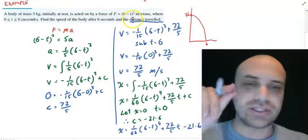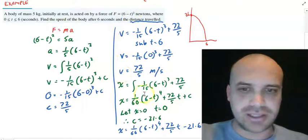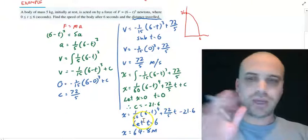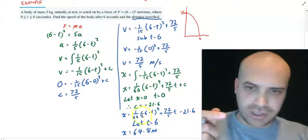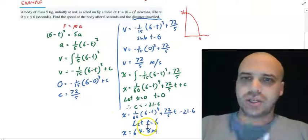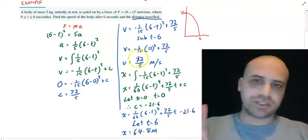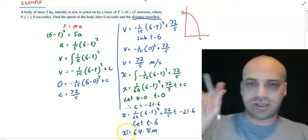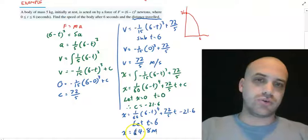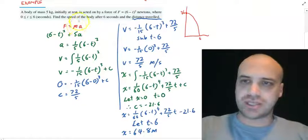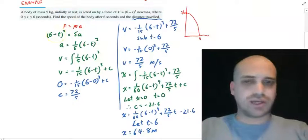Now, I want to know the distance traveled in 6 seconds. So, it's just subbing in t equals 6 at this point. And when we let t equal 6 in this equation, we get a displacement of 64.8 meters. So, after 6 seconds, it's traveling at 72 on 5 meters per second. And it has traveled 64.8 meters. So, there's a variable force. It all starts here, subbing this in. Pretty straightforward after that.